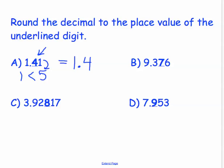In example B, we have 9.376. We are going to round to the hundredths place where the 7 is. We will look exactly to the right of the 7, and we have a 6 there. Because 6 is 5 or above, we are going to round the 7 up. And this number then becomes 9.38.